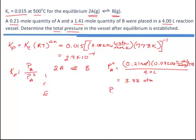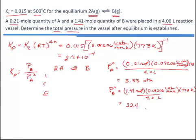I do the same thing for B, but I put in 1.41 moles, 773 Kelvin, and divide by the 4 liters. That's going to be the initial value for the pressure of B as 22.4 atmospheres. So then I'm going to plug in the initial concentrations of those two substances into my ICE table. We have 3.33 and 22.4.